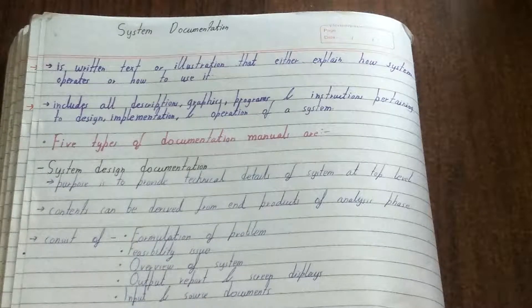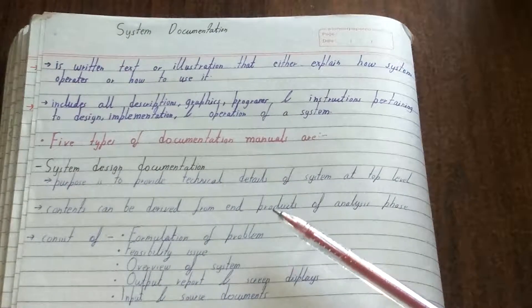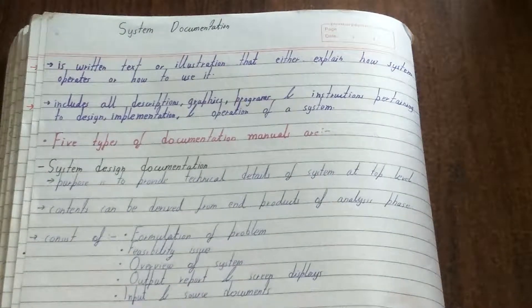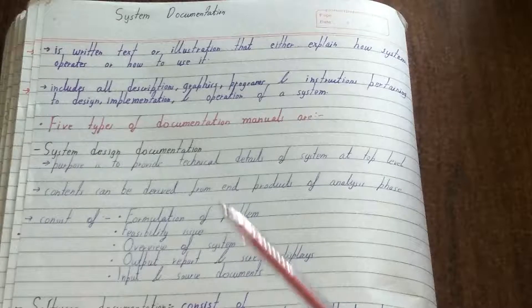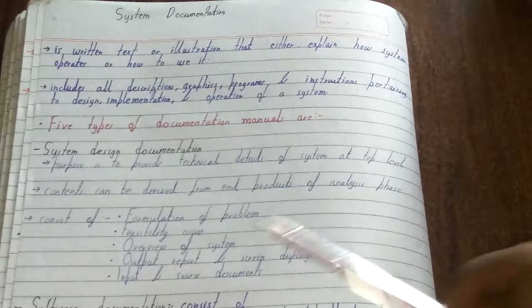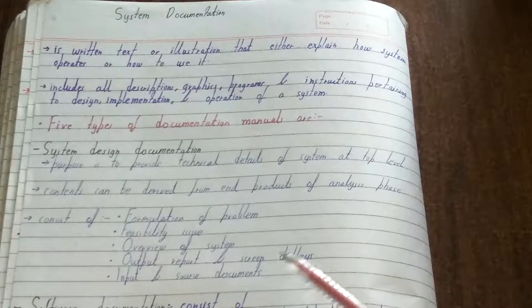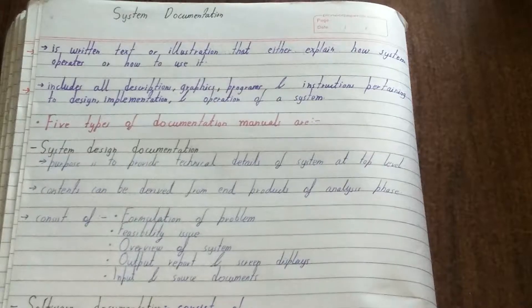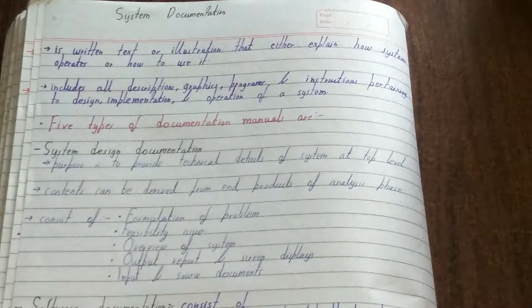You need to analyze each and every technical aspect, and that is contained in system design documentation — what are the technical requirements of a particular system. It can be derived from end products of the analysis phase. Whatever you analyzed, you write in system design documentation and then work on that system. It consists of: formulation of problems related to the system, feasibility issues such as electric power requirements or temperature constraints, an overview of the system, output reports and screen displays showing expected outputs given inputs, and documentation of inputs.